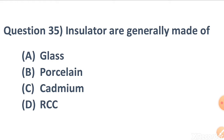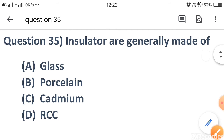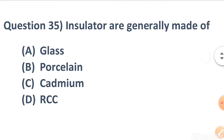Insulators are generally made of: A. Glass, B. Porcelain, C. Cadmium, D. RCC. The correct answer is A. Glass. The insulators are generally made of glass.